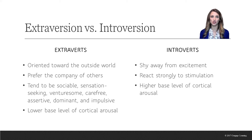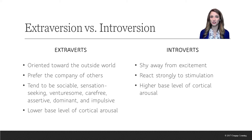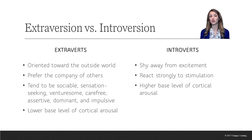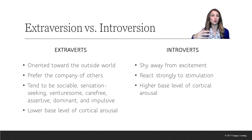Eysenck's first dimension is extroversion versus introversion. He defined extroverts as those oriented toward the external world — they prefer the company of other people, tend to be sensation-seeking, adventuresome, carefree, but also dominant, impulsive, and assertive. Because extroverts have a lower base level of cortical arousal, it takes more stimulation to get a response from them. Introverts tend to orient toward the internal world and shy away from external excitement. They react strongly to any type of stimulation because they have a higher base level of cortical arousal — it doesn't take much to stimulate an introvert.